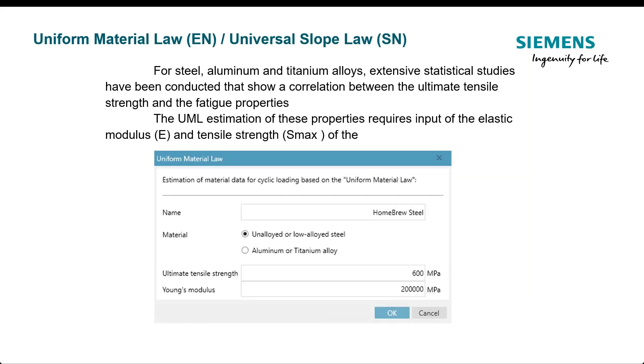If you don't have these materials in the software, there's something called the uniform material law, universal slope law. There's been research done and you can generate EN and SN curves from these two parameters, Young's modulus and the ultimate tensile strength. Now, for typical automotive steels may be okay. The aerospace people don't particularly like the uniform material law, but it is a way if you have no place to start where you can start with material properties.